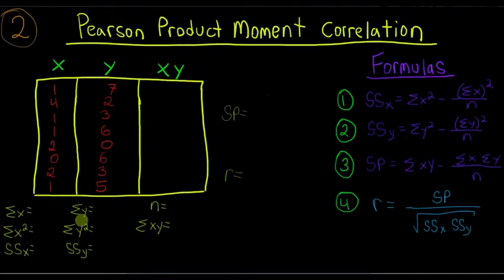So this is how I set up my page before I actually do the calculation. It's good to have your formulas handy. So I'm just going to start with the top here. And the first value we want to find is the sum of x. So I'm just going to sum up these values in our x column. And that's going to come up to 12.